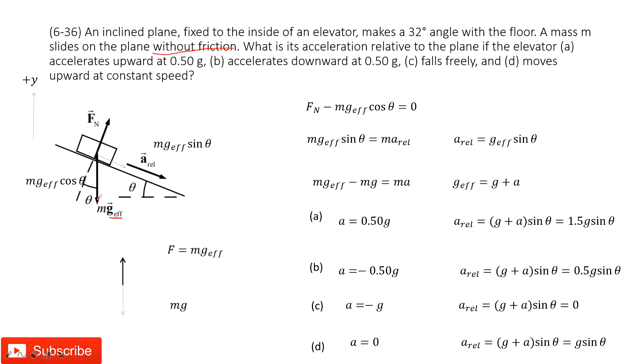First thing, we project the gravity, the effective gravity into a component. This one along the slope and vertical to the slope. So, we have mg effective sine theta, mg effective cosine theta.